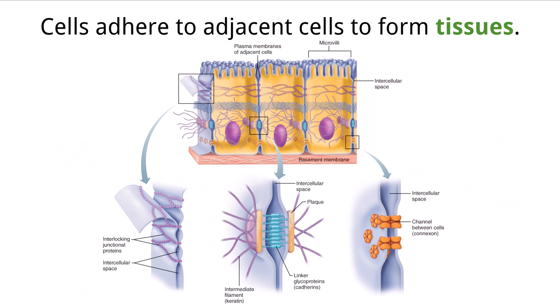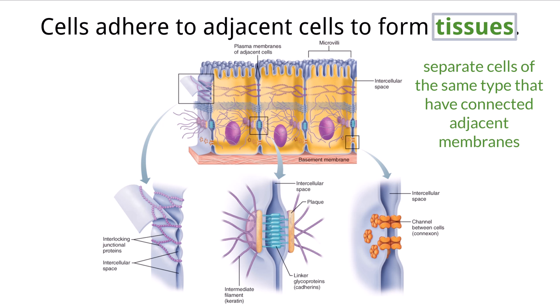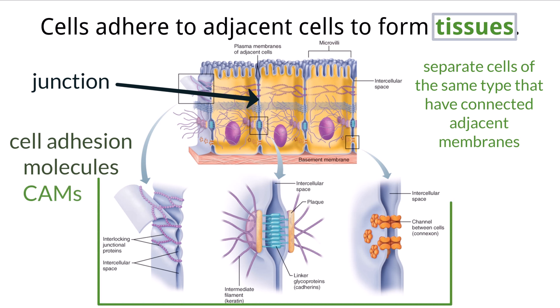In addition to controlling transport, cell membranes also have the ability to connect to the membrane of another adjacent cell, holding the two cells together. This is essentially how tissues within multicellular organisms are formed — separate cells of the same type held together by their membranes, often serving the same function together. The links between cells are called junctions, and they are made by specific molecules embedded in the cell membrane called cell adhesion molecules, abbreviated as CAMs. Some CAMs even allow for the passageway of substances to move from one cell to another, while others actively prevent such movement. For the IB exam, you just need to know that CAMs are components embedded within the cell membrane that extend outward to form a junction with another adjacent cell.